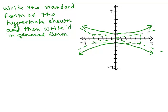Next one, write the standard form of the hyperbola shown and then write it in general form. Does this look familiar? The asymptotes are exactly the same. The little box around here is the same, but it is not the same hyperbola because this one is going up and down. This one has Y intercepts at plus or minus 1, and the X values go through 5 and negative 5.